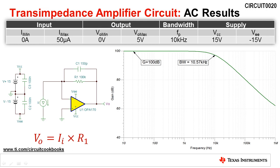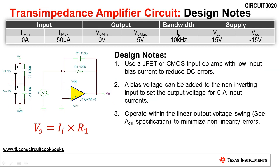When designing transimpedance amplifier circuits, there are a few design notes to be aware of. First, it is recommended to use a JFET or CMOS input amplifier with low input bias current to reduce DC errors.